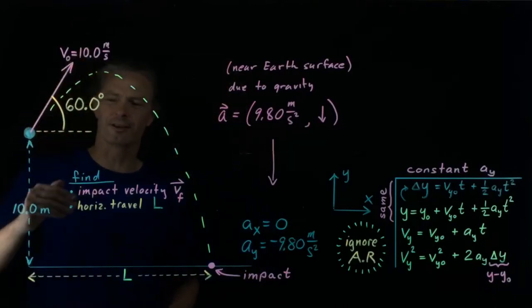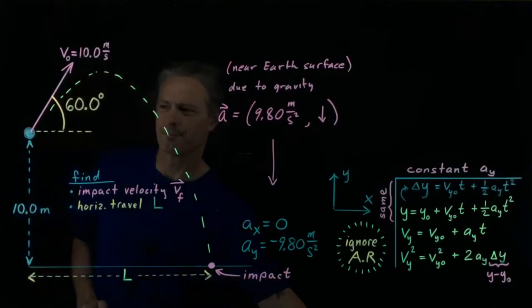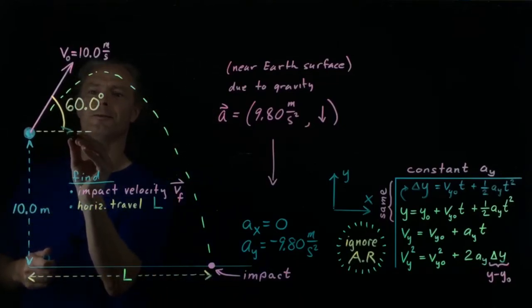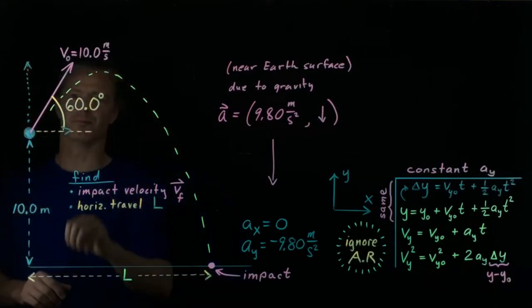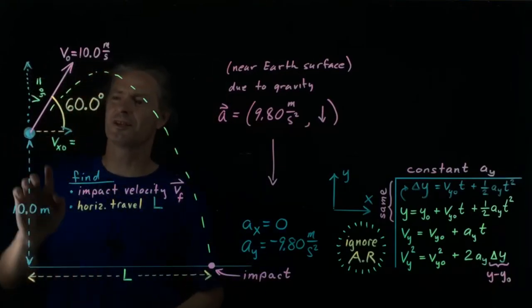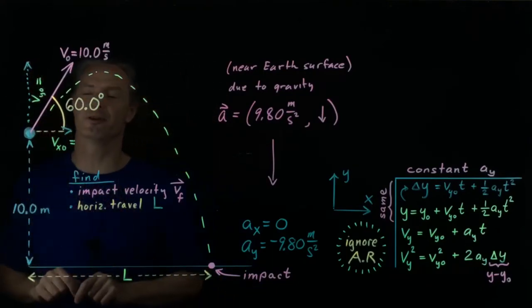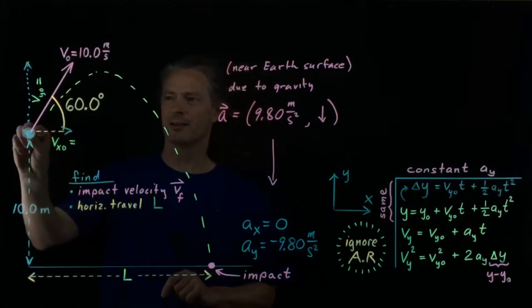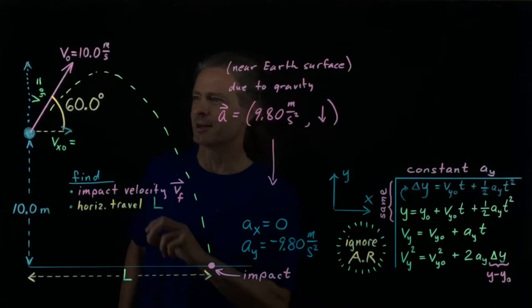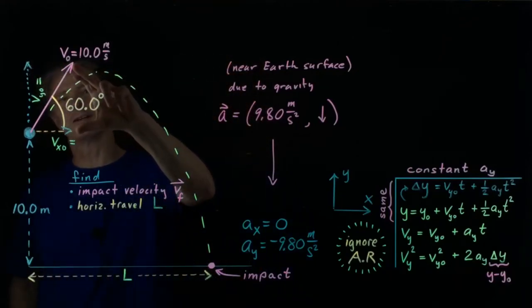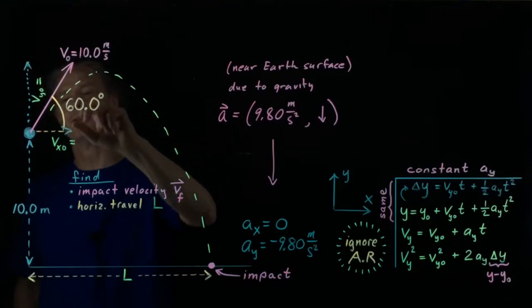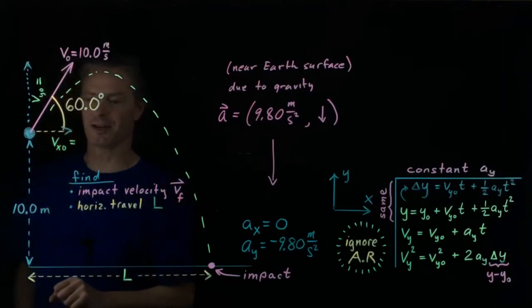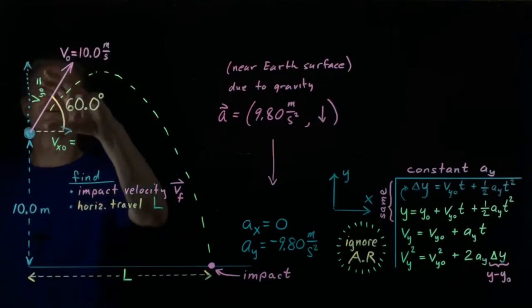Now let's take our initial velocity vector and break it up into x and y components. The x component goes to about here, and the y component up to about here. Here's the x component of the initial velocity; here's the y component of the initial velocity. The zero subscript means at time zero, and we'll imagine that the ball is right here at time zero. If we put the y component of the initial velocity here, we can see that all of this forms a right triangle. The magnitude of the initial velocity is the hypotenuse. The y component is the side opposite the 60-degree angle, and the x component is adjacent to the 60-degree angle.